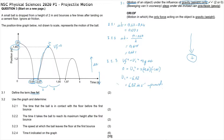This could also have been solved with the equation vf = vi + g·Δt. Since we calculated the time to reach maximum height in the previous question, we could use that to calculate the initial velocity. Either way, the answer is the same.